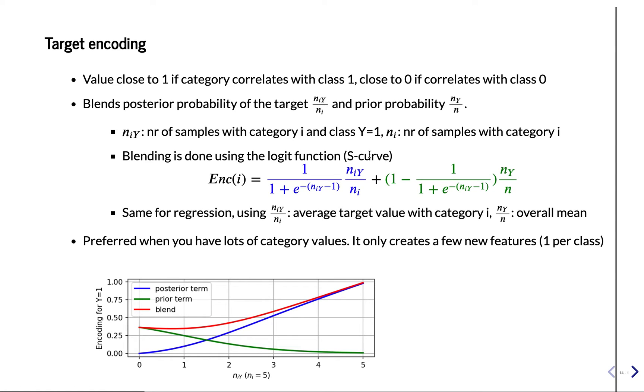And we do that with an S-curve. So this complicated formula right here is simply just the sigmoid curve. And blending means that we compute the sigmoid given the point that we measure, the number of occurrences of our category i and the target is one, times the posterior probability.